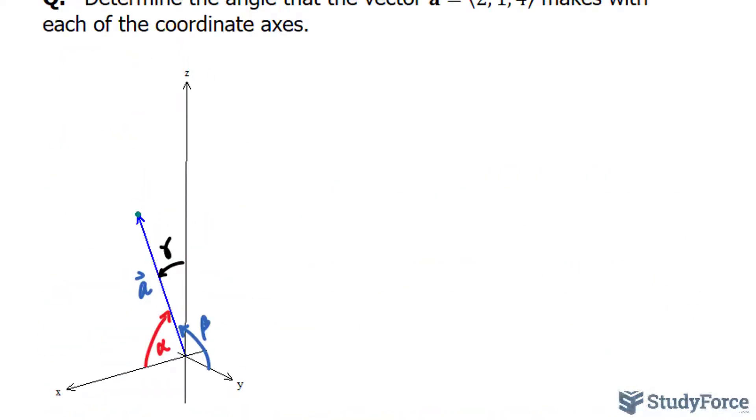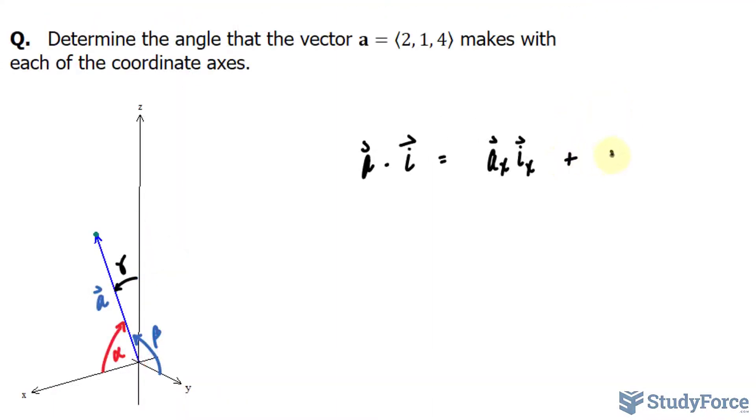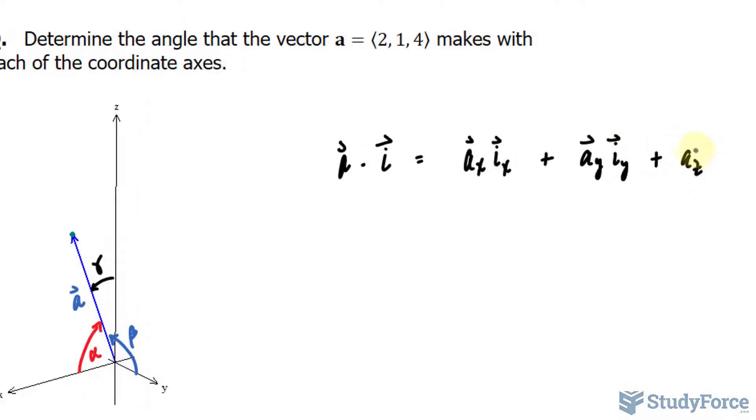Now remember, whenever we want to find the angle between two vectors, we use the dot product, which is calculated in two ways. The first way is the algebraic way, where you take the two vectors (in our case vector a and unit vector i) and multiply their components together and sum them up. You end up with a scalar quantity where you have the x components of the two vectors plus the y components plus the z components. This is the algebraic way to find the dot product.